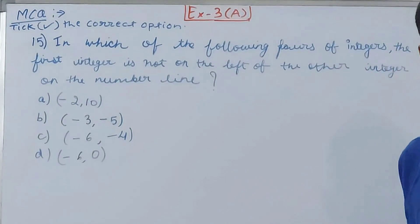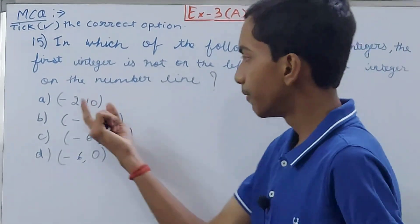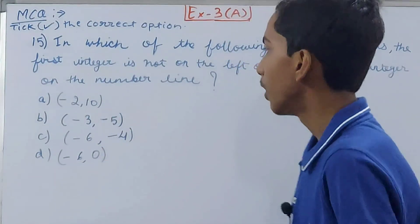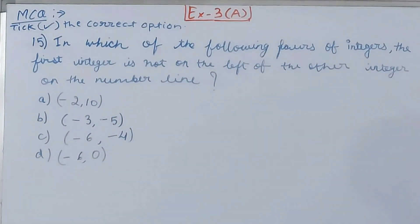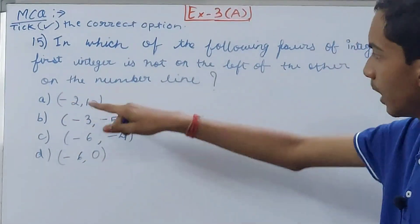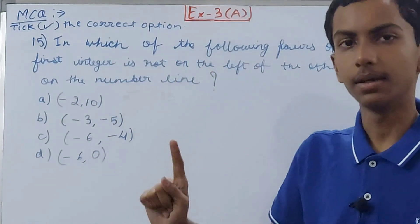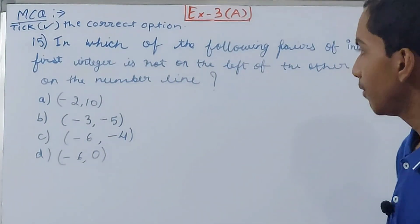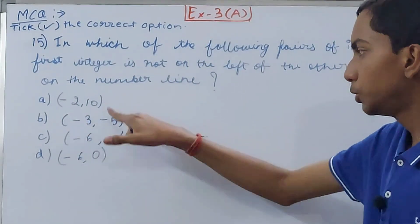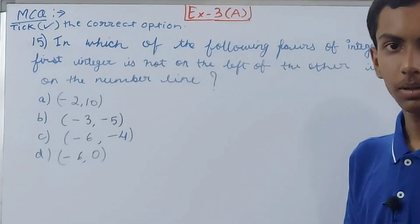So we have some pairs, right? And how will we do this? See, first of all, the question is saying the first integer is not on the left of the other integer on the number line. That means if we take this pair, for example, then -2 should not be to the left of 10 on the number line. Same way here, -3 should not be to the left of -5 on the number line.